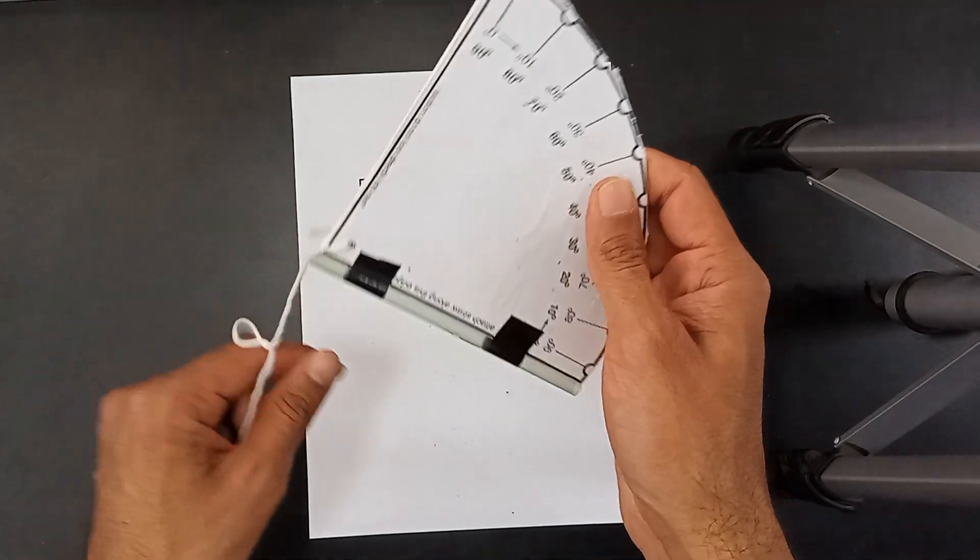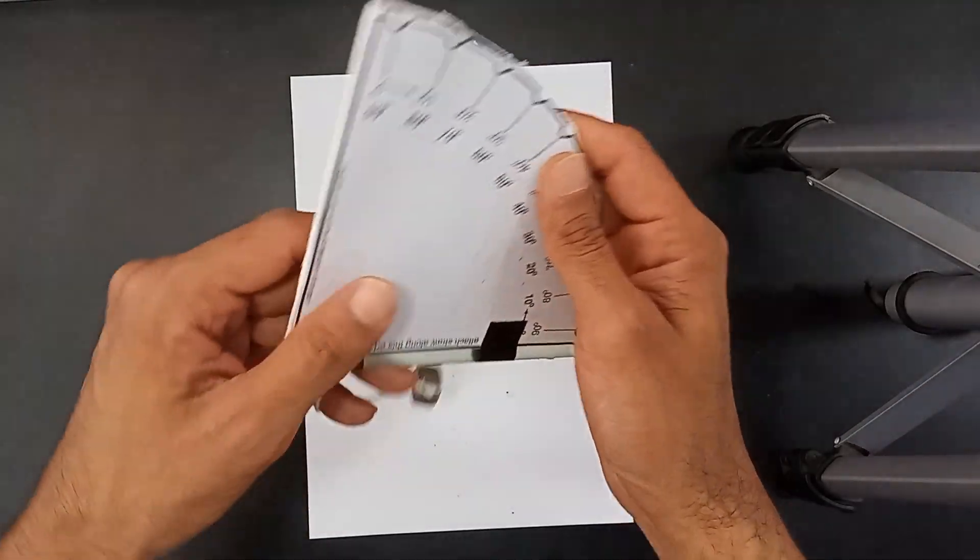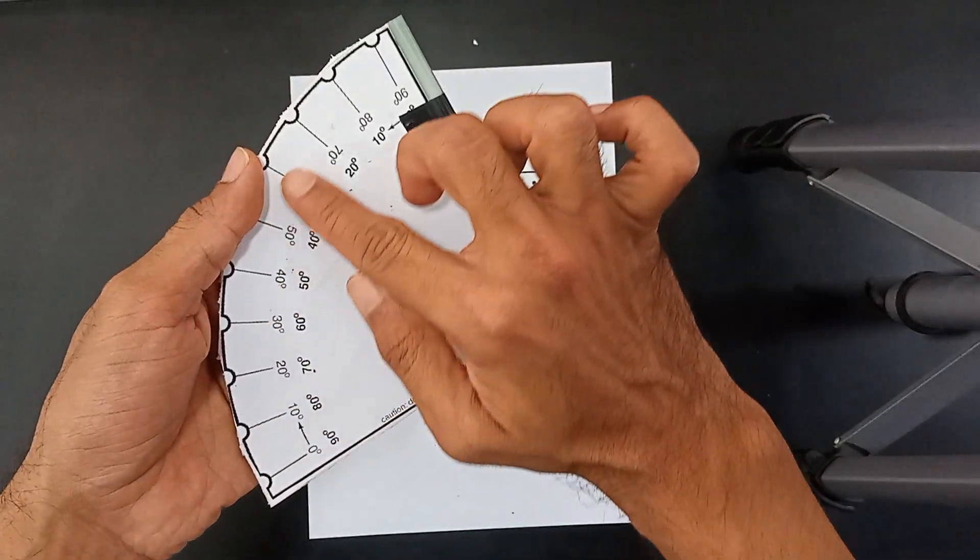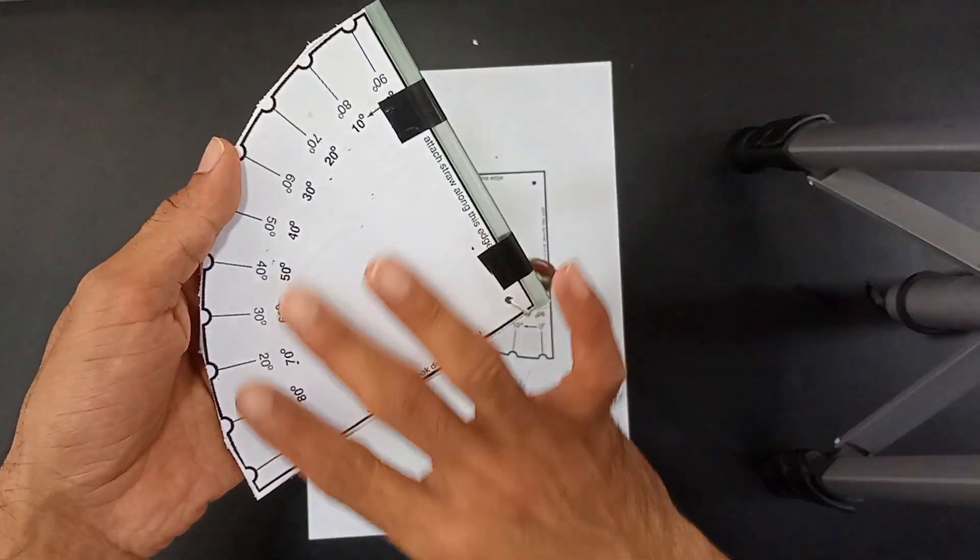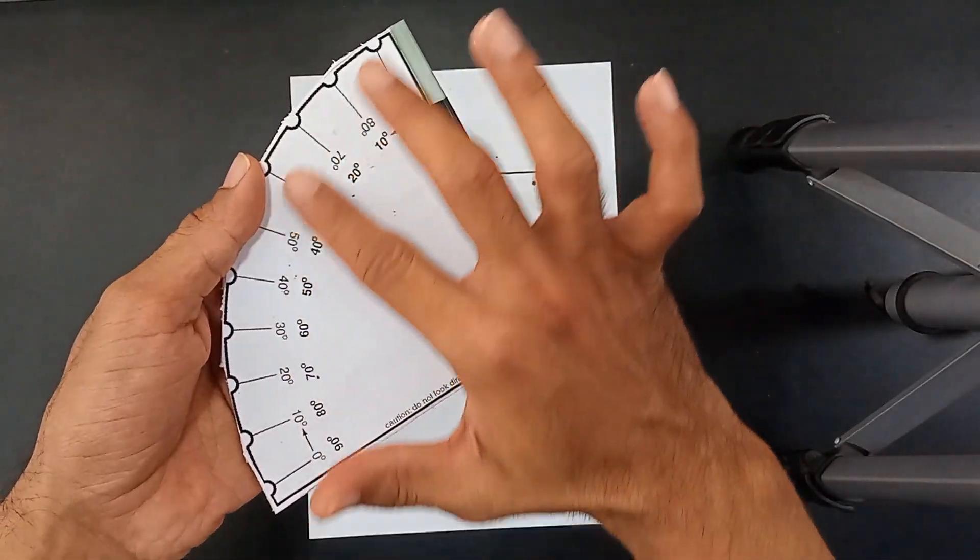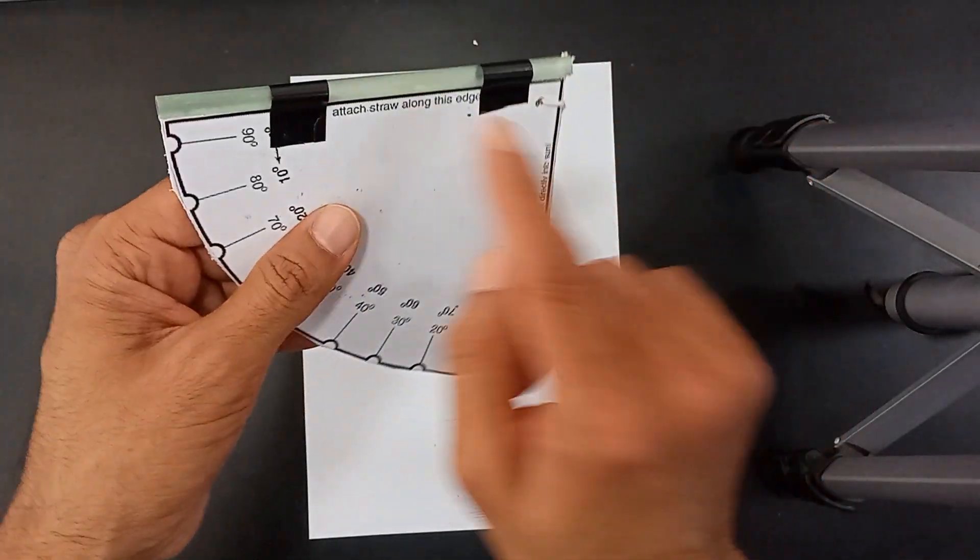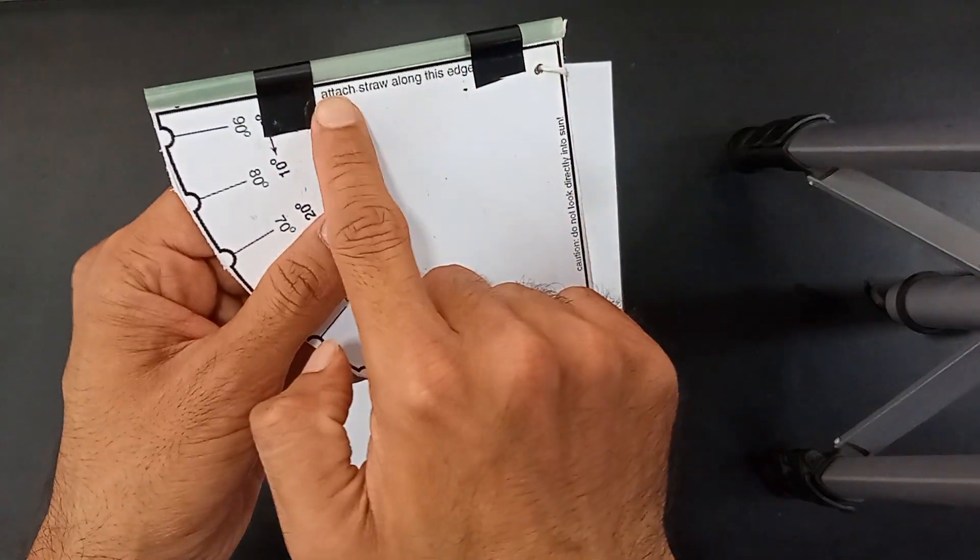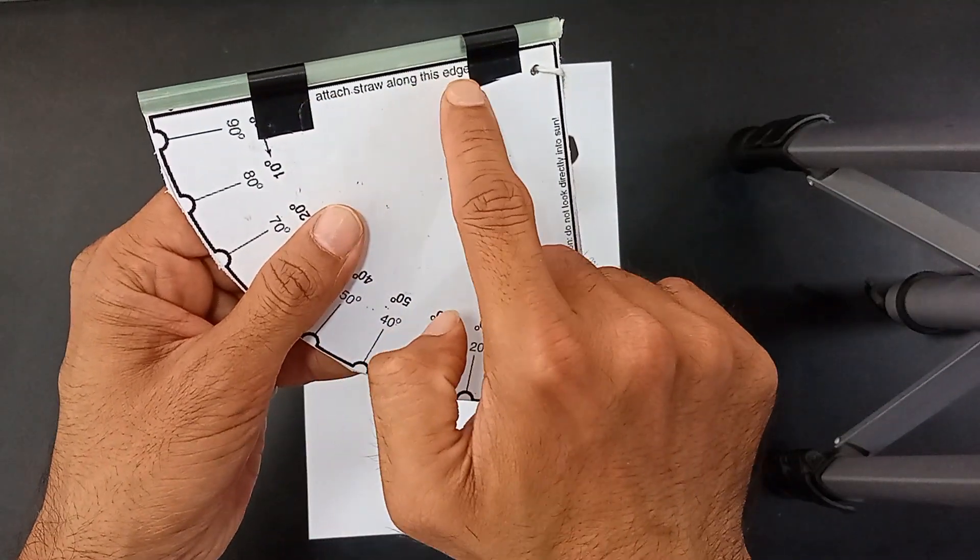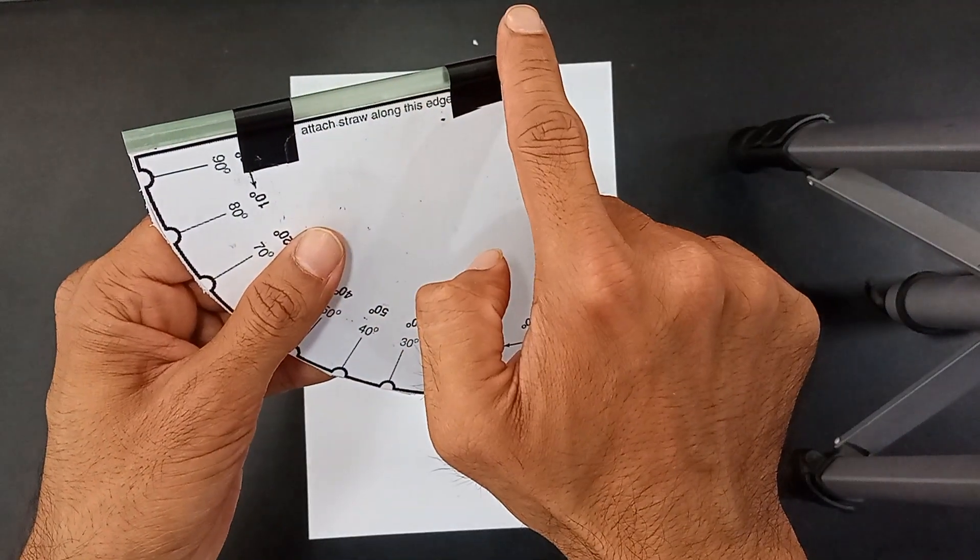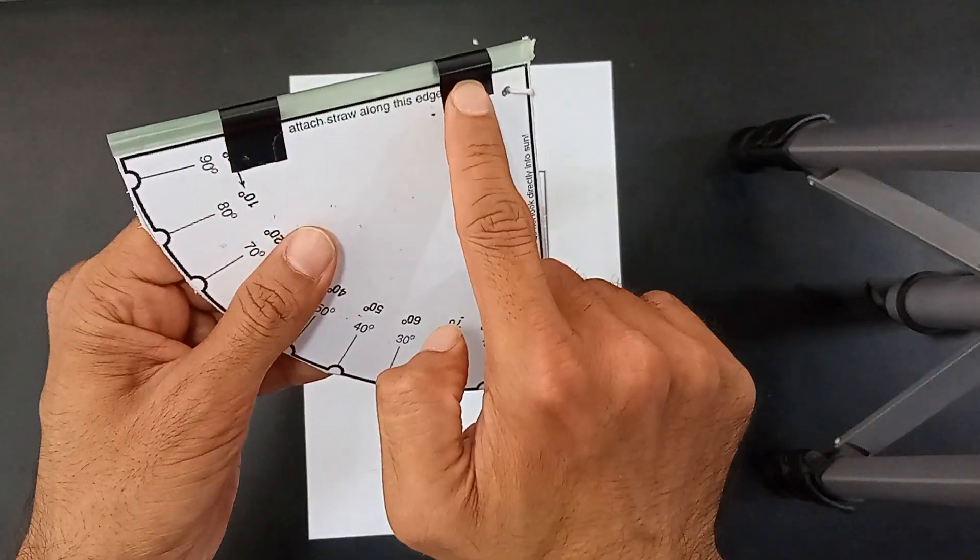This is how it would look like, very simple right? After this, observe that there are degrees marked on the side of this quadrant. I have also placed a straw over here. The instruction is written 'attach straw along this edge.' I have placed the straw along the edge as written, taped it so that it stays over there.